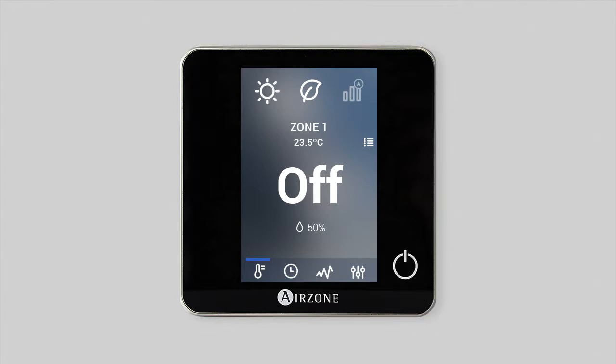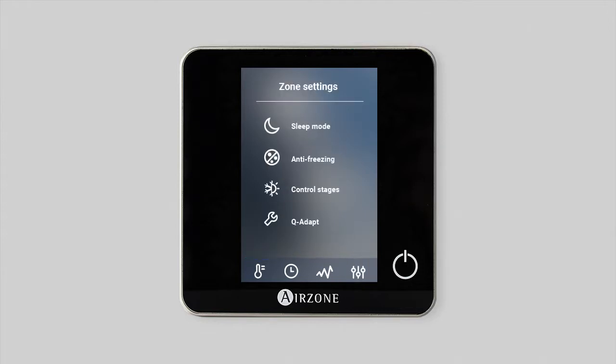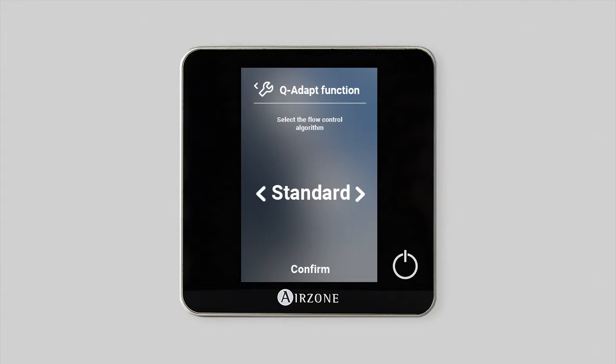This function is configured from the zone setting menu on the blue face thermostat. It offers five options to choose from. Standard: this is the default factory setting. Select the ventilation speed to maintain balance between the airflow supply and the sound level in the zone, depending on the number of zones on demand.